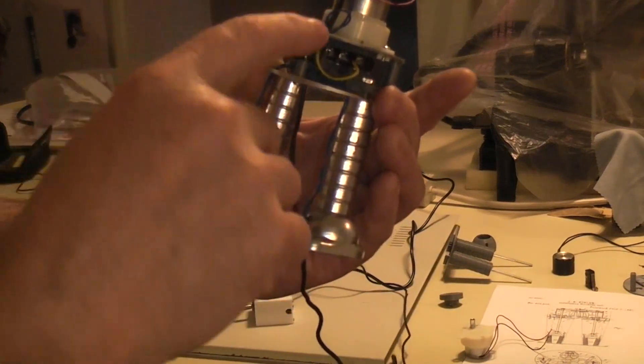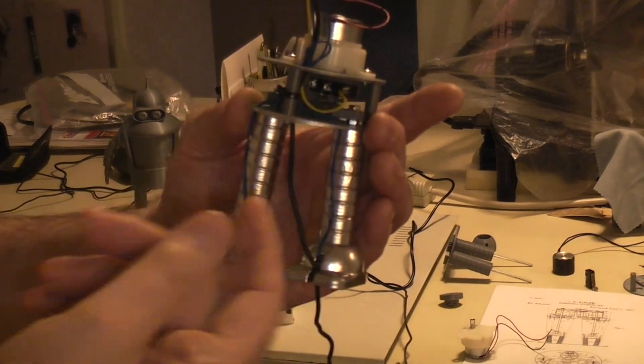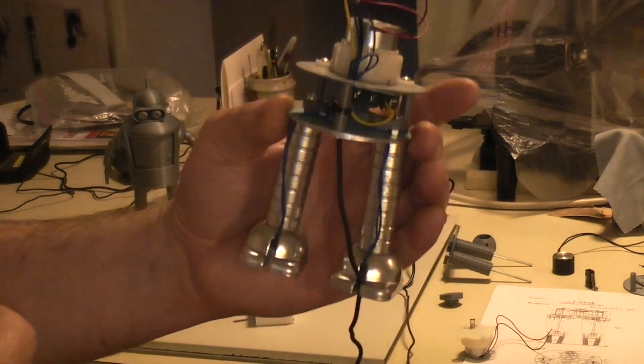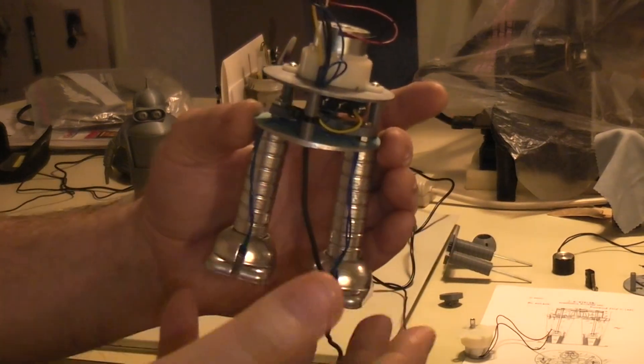By soldering those magnets on there, which way you solder them you could have your robot walking forward or backward, or you can reverse them.